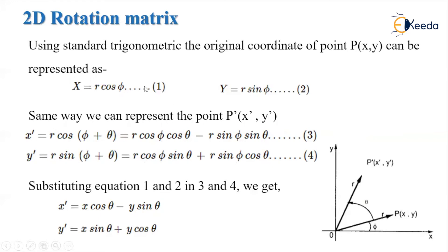Now we have four equations. We substitute equations 1 and 2 into equations 3 and 4, since x = r cos(phi) and y = r sin(phi). After substitution, we get: x' = x cos(theta) − y sin(theta), and y' = x sin(theta) + y cos(theta).